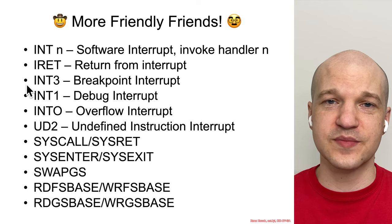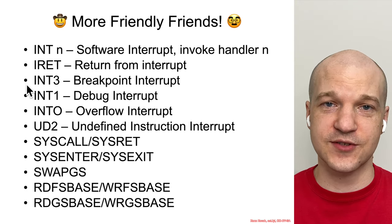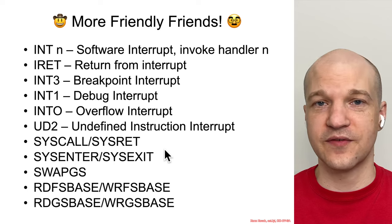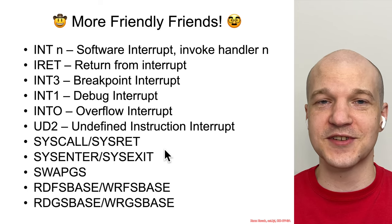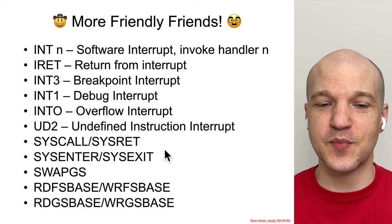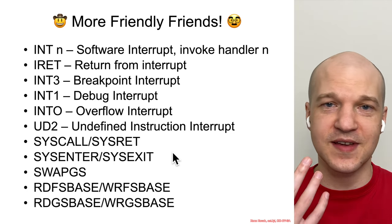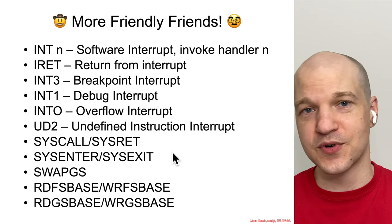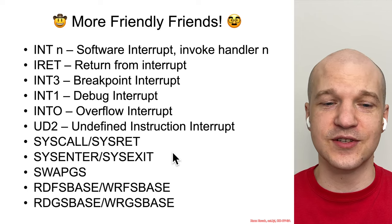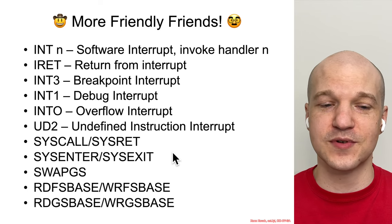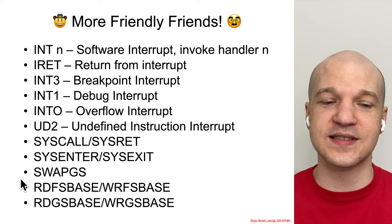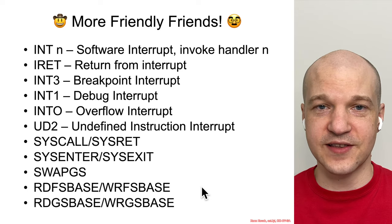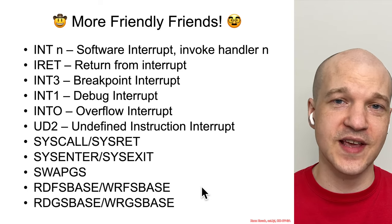We also covered STI and CLI to set and clear the interrupt flag to mask interrupts. We saw different software interrupt mechanisms — assembly instructions to invoke hardware interrupt vectors from the interrupt descriptor table. We saw SYSCALL, SYSENTER, and related instructions used on both 32-bit and 64-bit systems, and the back-and-forth between what Intel supported and what AMD supported, and which are preferred on 64-bit versus 32-bit.